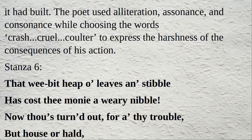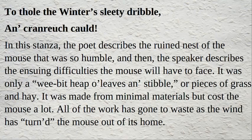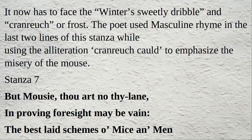Stanza 6: 'That wee bit heap o' leaves an' stibble has cost thee mony a weary nibble. Now thou's turned out for a' thy trouble.' In this stanza, the poet describes the ruined nest of the mouse that was so humble. It was only a wee bit heap of leaves and stibble — pieces of grass and hay — made from minimal materials but costing the mouse a lot. All of the work has gone to waste as the wind has turned the mouse out of its home. It now has to face the winter's sleety dribble and cranreuch, or frost. The poet used masculine rhyme and alliteration to emphasize the misery of the mouse.